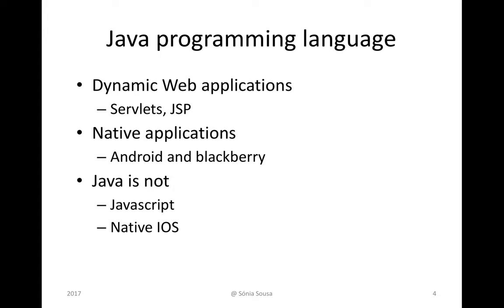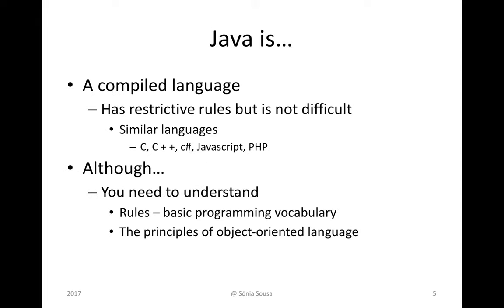Be aware that Java is not JavaScript or native iOS. Other platforms exist in the market to develop for those two types of languages. Java has restrictive rules, but it's not difficult to learn. You need to understand the basic rules and principles of object-oriented language, and that's what we are going to address.